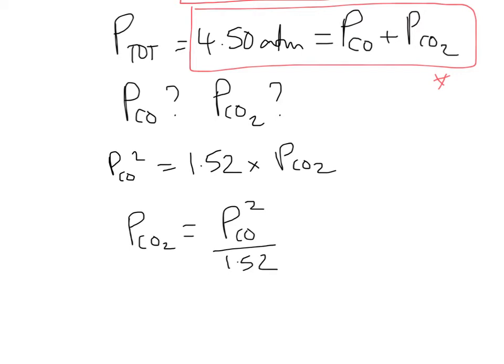And what good is this? Well, I can take this expression and I can substitute in for the partial pressure of CO2 now. So then we can write 4.5, I'll leave off the units just to make it easier. That's equal to the partial of CO plus the partial of CO2, and the partial of CO2 we've got from above, right? So we've got this here that we can just substitute directly in its place. So that's PCO squared over 1.52.